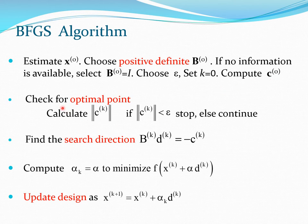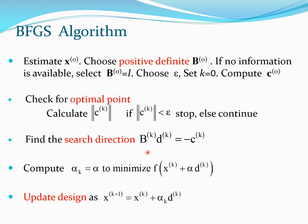You check whether the current point is an optimal point by calculating the norm of the gradient. If this norm is less than your chosen small number epsilon, stop; else continue. You find the search direction by solving the linear system Bk·dk = −ck. Bk is essentially Hk in Newton's method, but here it is a matrix pretending to be Hk, starting as I and building up from there.